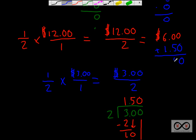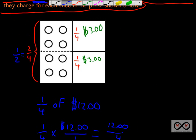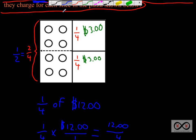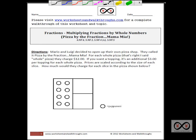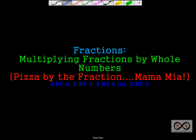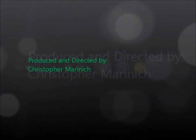0 plus 0 is 0, 0 plus 5 is 5, 6 plus 1 is 7 — so we've got the price for that half-pizza with pepperoni on it: $7.50. That was a quick look at a word problem featuring multiplying fractions by whole numbers. Thanks for checking out worksheetsandwalkthroughs.com — see you next time!